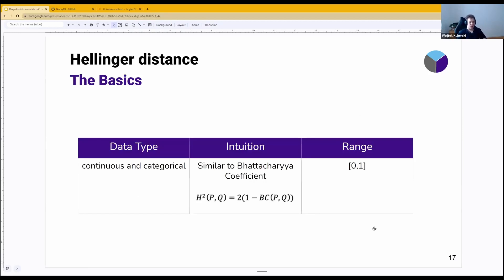So that's it. Now we're moving to the second one, which is the Hellinger distance. It covers both continuous and categorical data.